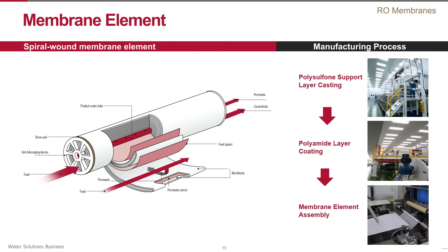The most widely used membrane module configuration today is a spiral wound element, as shown here. It consists of a number of so-called envelopes. Each envelope is basically two membrane sheets separated by a thin plastic net called a permeate spacer — a permeate tricot that forms a channel allowing transport of the permeate towards the permeate tube collector.